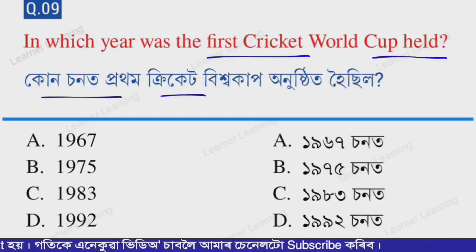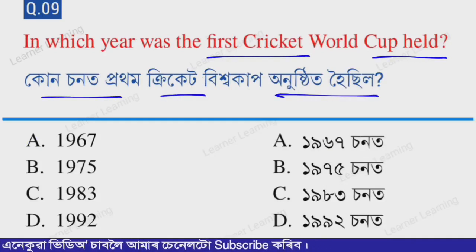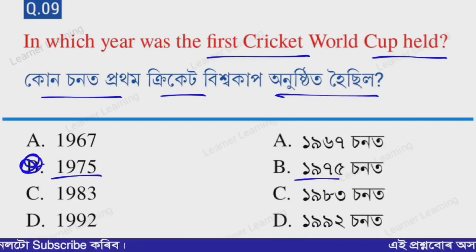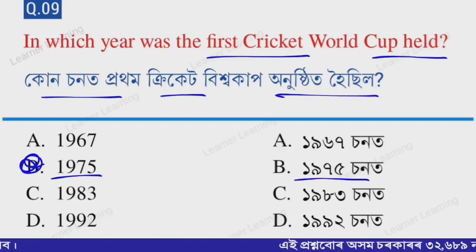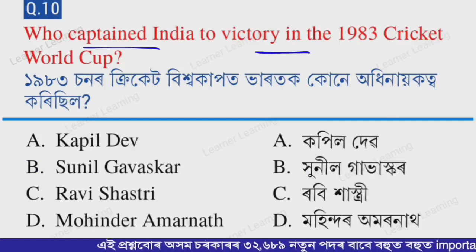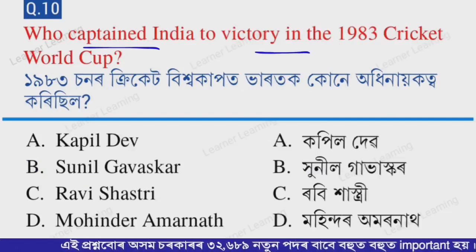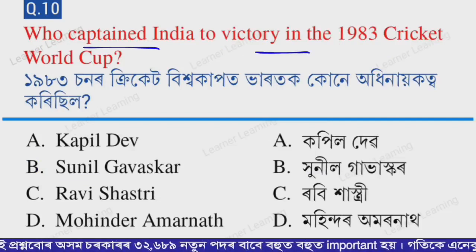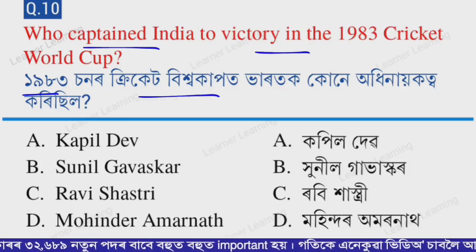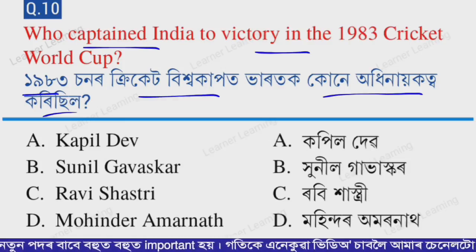Next question: in which year was the first Cricket World Cup held? The correct option is option B — 1975. The first Cricket World Cup was held in 1975.